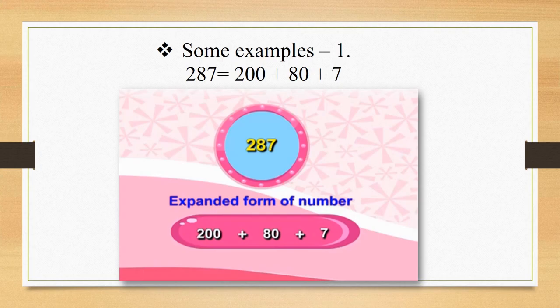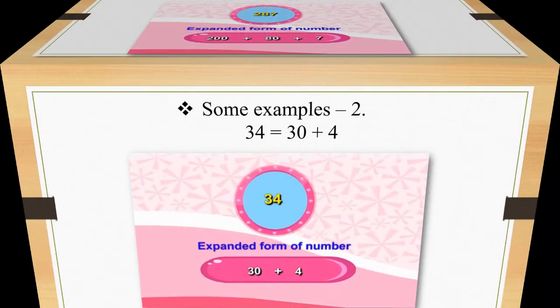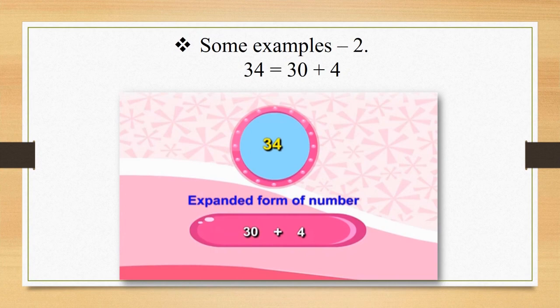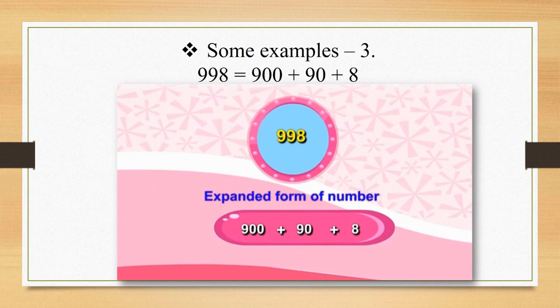Now let us see some examples of expanded form. The first number is 287. 287 means 200 plus 80 plus 7. The second example: the number is 34. 34 means 30 plus 4. Our last example of expanded form: the number is 998. 998 means 900 plus 90 plus 8.